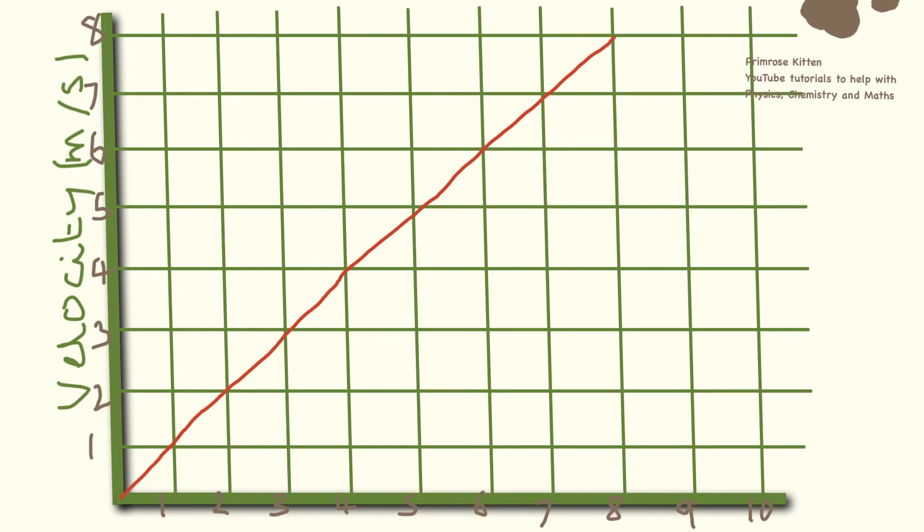So here we have a velocity time graph. We have velocity going up the side and then we have time going along the bottom, and time is in seconds here.